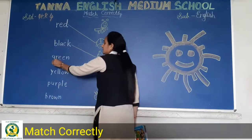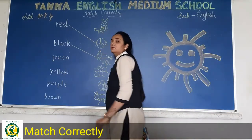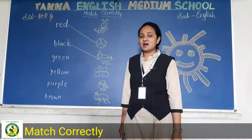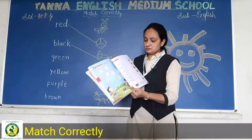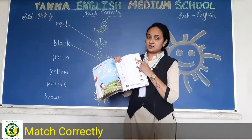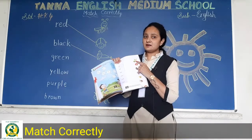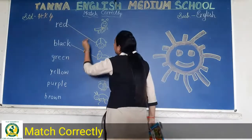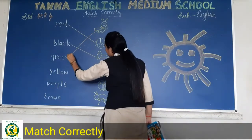Now this — G-R-E-E-N, green. Kunsa color hua? Green. Yehaan pe green color ka kya hai? Grasshopper hai — toh grasshopper green color ka hota hai na. Toh hum yeh green ko grasshopper ke saath match karayenge.